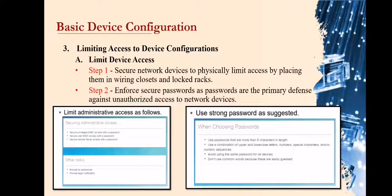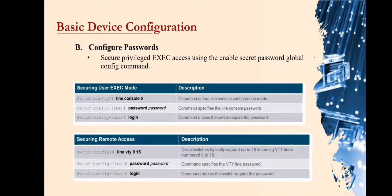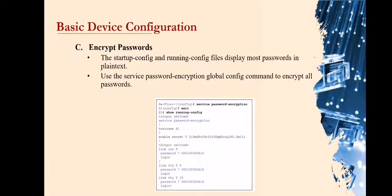We will just go through the steps to make this discussion easier for you. The next step in limiting device access is configuring passwords. Secure privilege exec access using the enable secret password global configuration command, as shown in the example below. The next step is encrypting passwords. The startup config and running config files display most passwords in plain text, which is a security threat because anyone can see the password if they have access to these files.